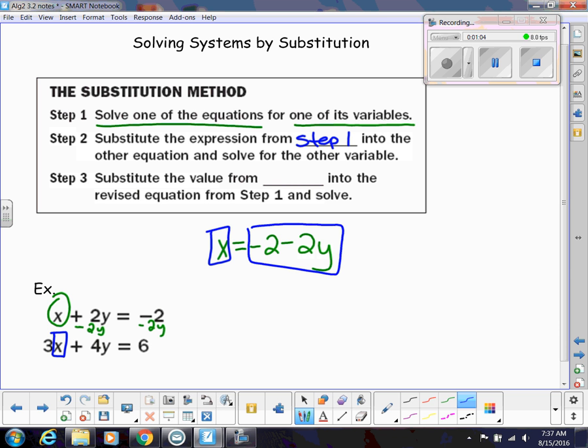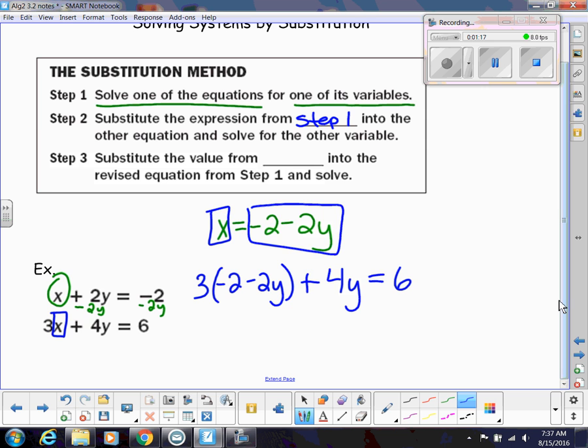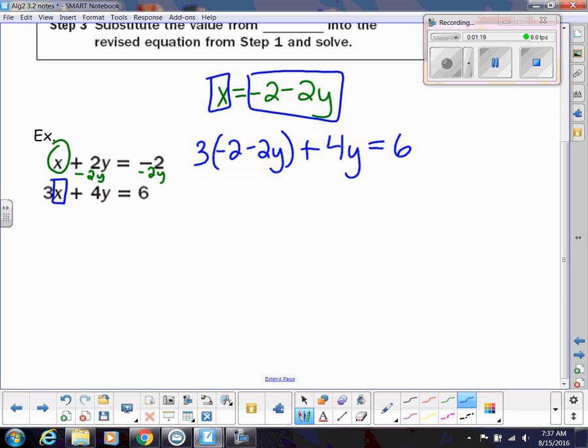Now for step two, it would look like this. I still have my three, but instead of x, I'm going to have negative 2 minus 2y. The rest of the equation stays exactly the same. And now I have an equation with just y's in it, so I'm able to distribute and solve for y.